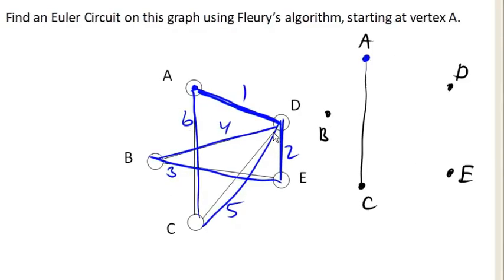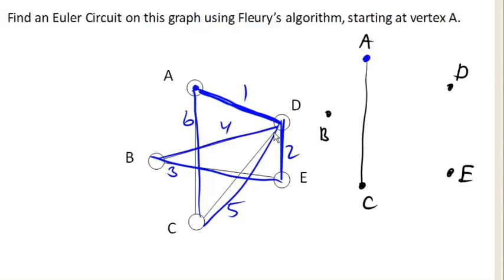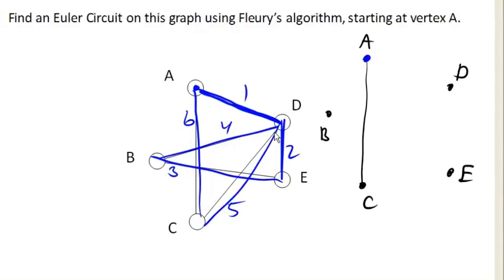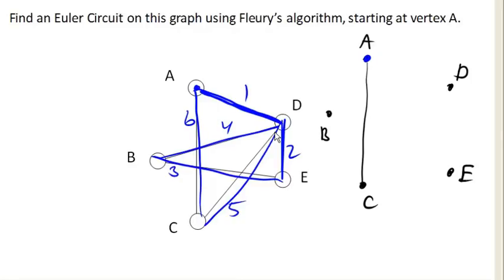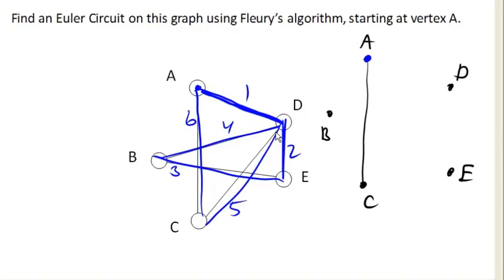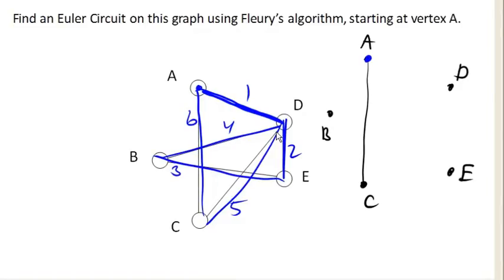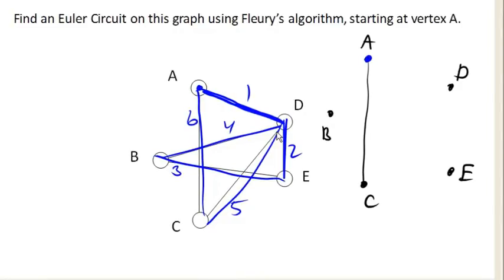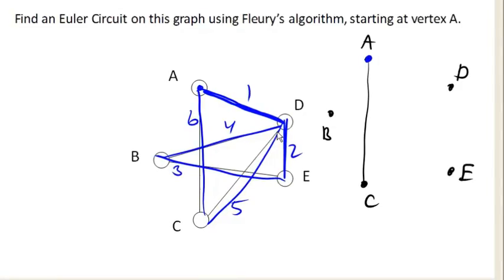Now, depending upon how we had made our original choices at the beginning, we may have ended up with different Euler circuits. For most graphs, there is not just one Euler circuit. If there is an Euler circuit, there's usually not just one, but multiple Euler circuits depending upon the choice of what direction you go first.